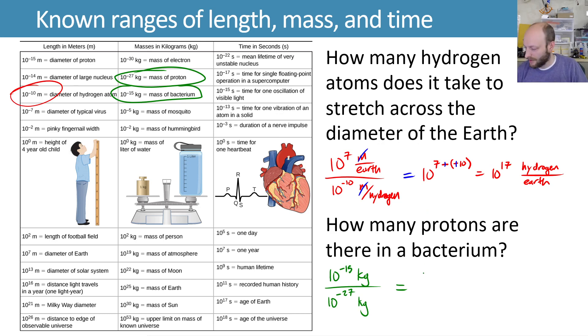This again gives us 10 to the minus 15th minus that minus 27, or plus 27. So plus 27 minus 15 gives us a plus 12. So it's on the order of 10 to the 12th protons per bacterium.